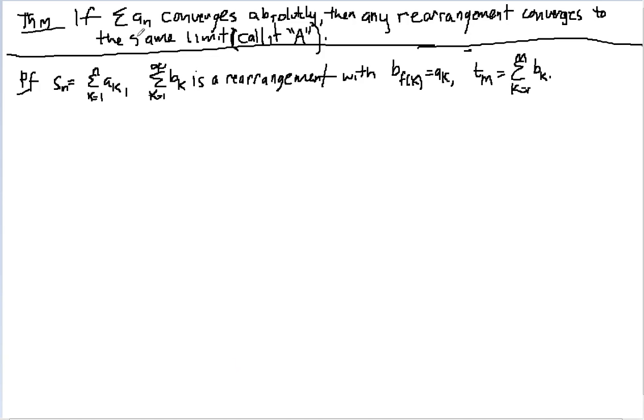All right, we're going to prove the theorem. If the series of a_n converges absolutely, then any rearrangement converges to the same limit, which we'll call a.